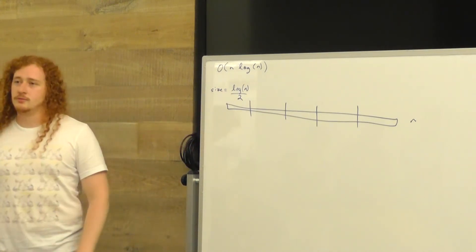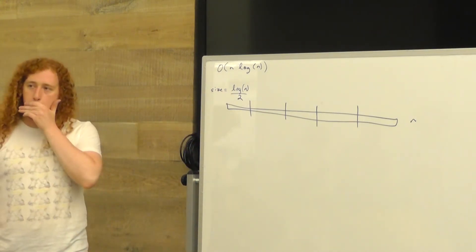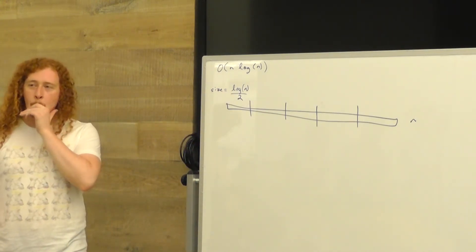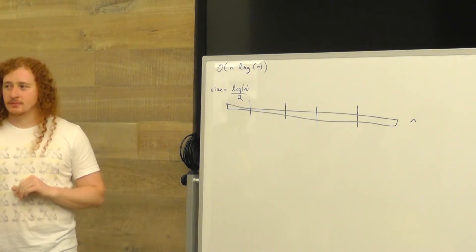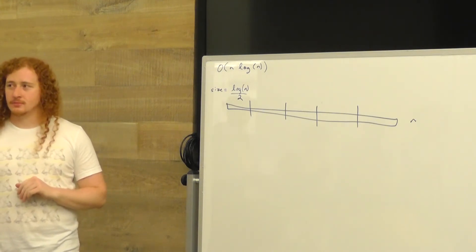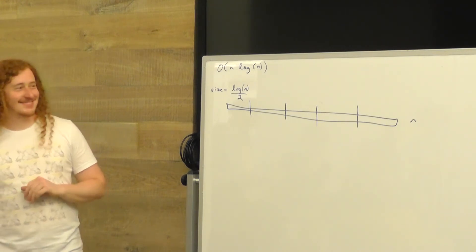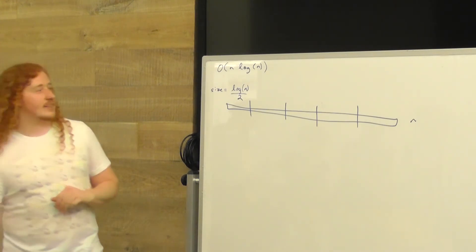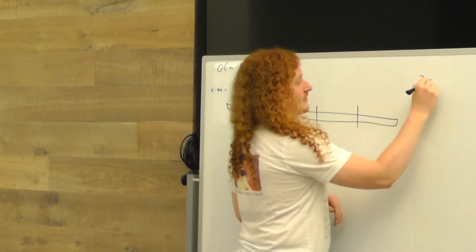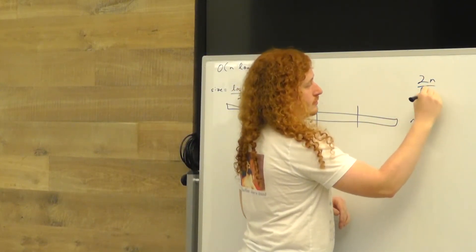Here's a cool trick. We have an N log N algorithm. We've got this array of size 2N minus 1. Let's chop it up into segments of size log N over 2. How many of those are there? 2N over log N.